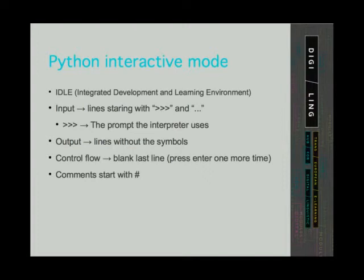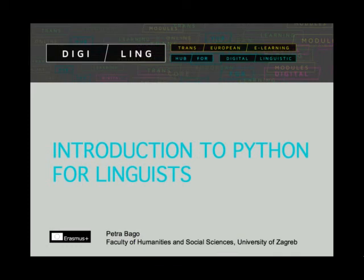Python has one more thing that makes our life easier: IDLE. IDLE is an integrated development and learning environment where we can start learning to write Python code. The interpreter uses the prompt of three greater-than signs. Input lines start with the prompt or with three periods, and output lines are the lines without these symbols. Comments start with the number sign and are used by programmers to explain code to themselves or other programmers — comments are ignored by the interpreter and are not executed. Your assignment for this lesson is to install Python version 2.7 on your computer and write your first line of code: print('Hello World').